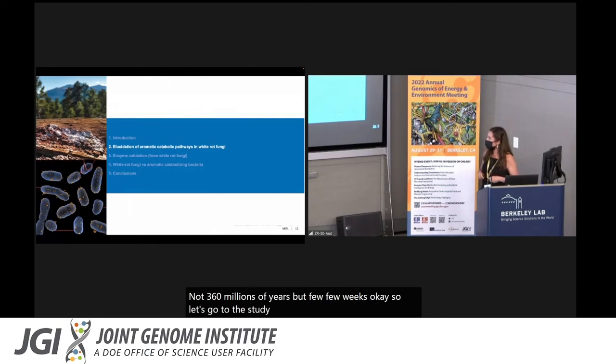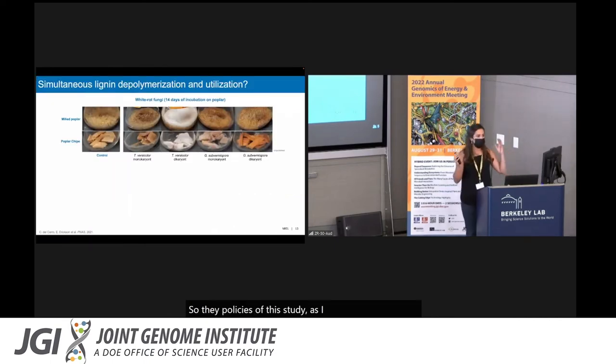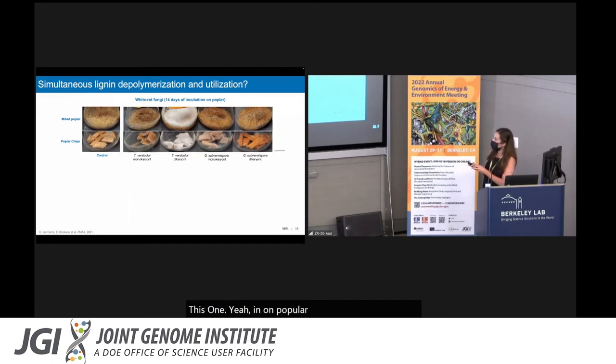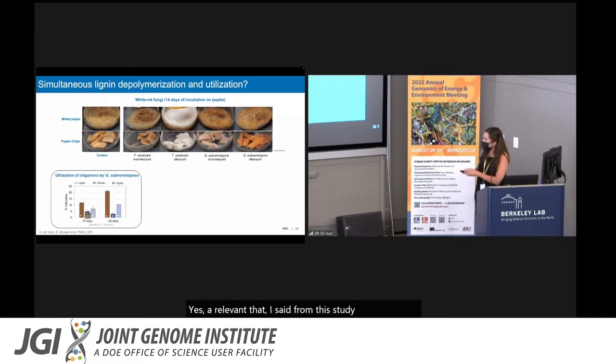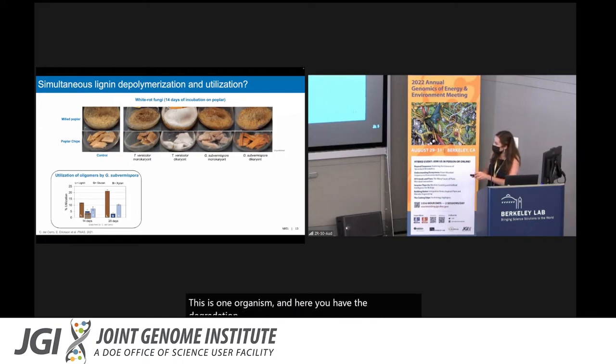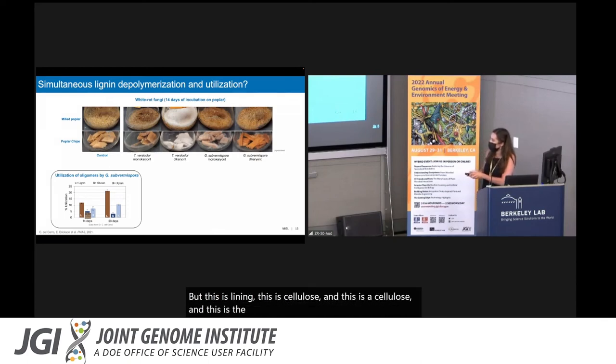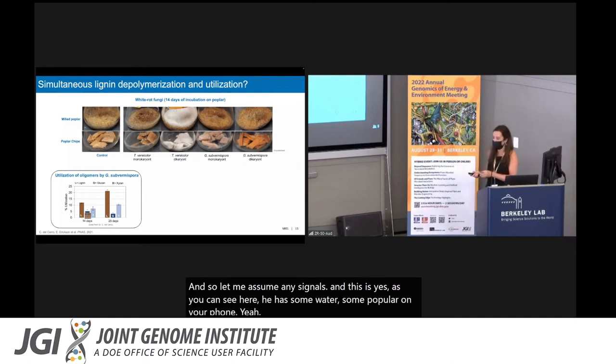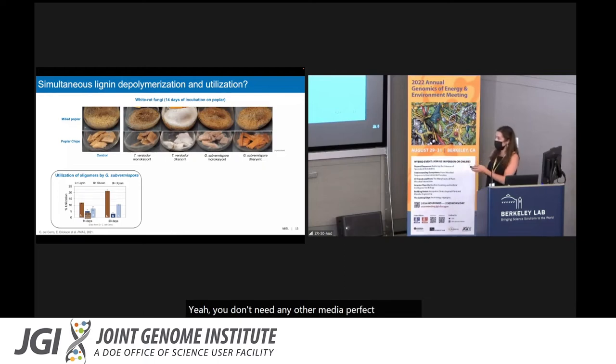Let's go to the study. The hypothesis of this study, as I was saying, was demonstrating the simultaneous depolymerization and utilization of lignin. So we were growing this organism on poplar, like pre-poplar or poplar chips. Here I'm going to show you just a relevant data set from this study. This is one organism, and here you have the degradation of the different polymers. This is lignin, this is cellulose, and this is hemicellulose. This is two different time points in days, not hours. So you can see that after 28 days, this organism is able to degrade 20% of the lignin, almost not utilizing any cellulose and some hemicellulose. As you can see here, you have some water, some poplar, and your fungi. You don't need any other media. Perfect. We know that these fungi are degrading lignin. This is not new.